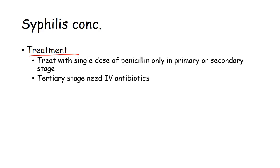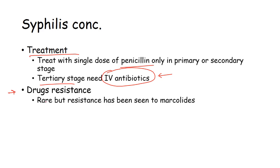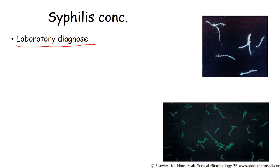The treatment for syphilis is a single dose of penicillin in the primary or secondary stage. If it goes to the tertiary stage, it needs multiple antibiotics — three or four different types. There are some drug resistance patterns; though rare, resistance has been seen for macrolide antibiotics. But penicillin works fine for syphilis.